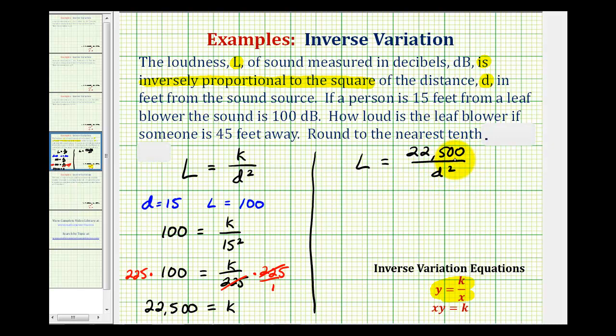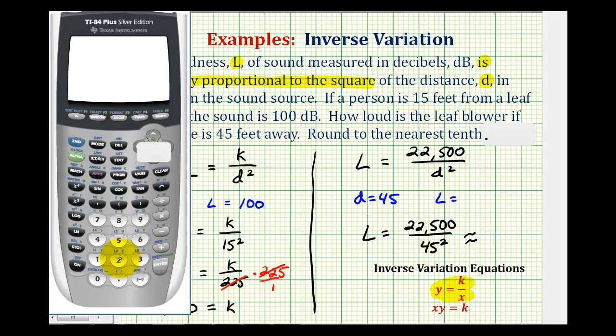So then if someone is 45 feet away, we know d is equal to 45. We want to determine what L would be. So we'll have L equals 22,500 divided by 45 squared, which would be approximately 11.1 decibels, rounded to the nearest tenth.